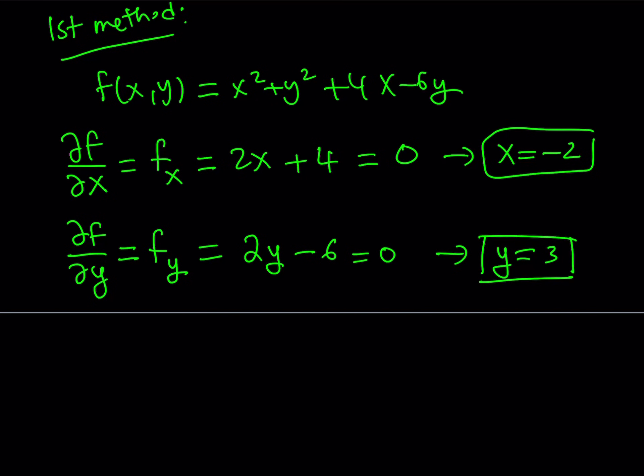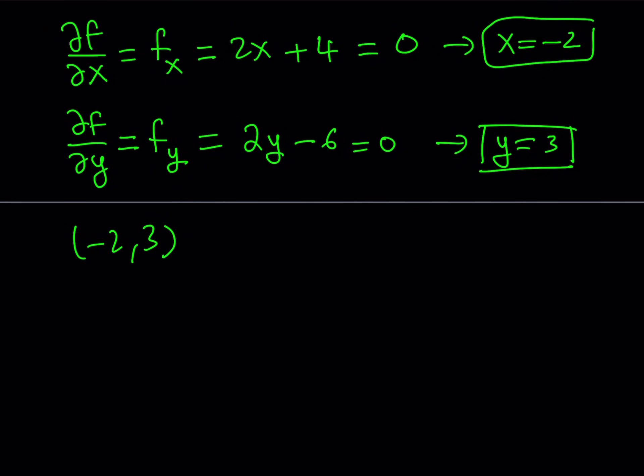Since our function is not equal to any constant, basically we can replace x and y with anything. So negative 2 comma 3 is basically a critical point, and there's only one critical point. So it must be the minimum. Of course you can always check with the second partial derivatives, but I don't want to keep the video too long.